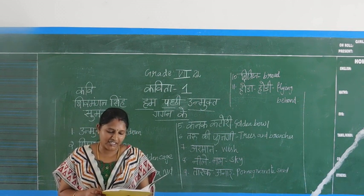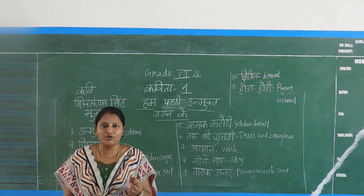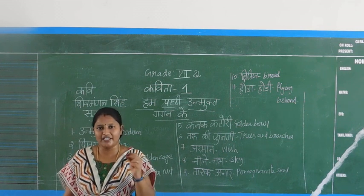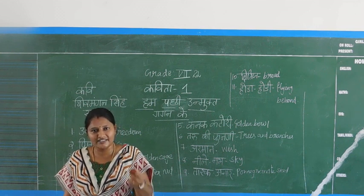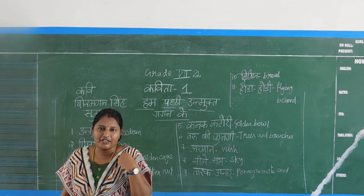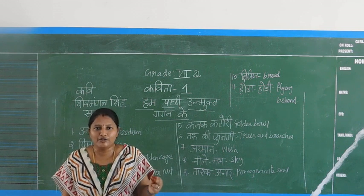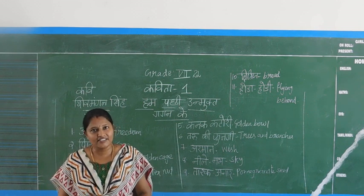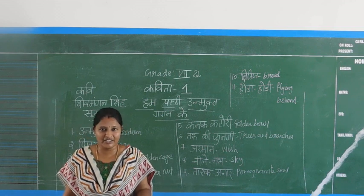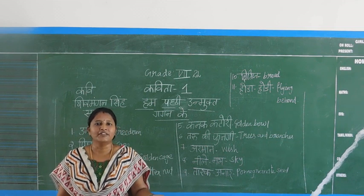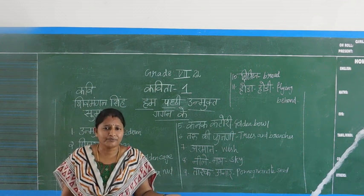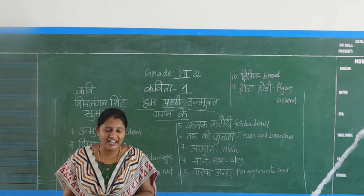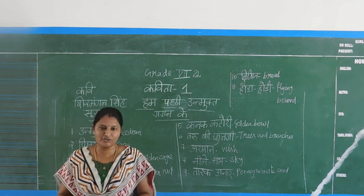'Kanak kadori ki na ikaase' — kanak kadori means golden bowl. Even if you give us food or grains in a golden bowl, we are not able to eat it. Whatever you give us, however valuable it is, we don't like that kind of life. We want to live in a free society.